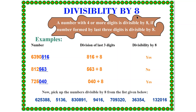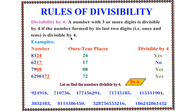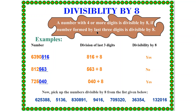The next rule is divisibility by 8. The rule is: a number with 4 or more digits is divisible by 8 if the number formed by its last 3 digits is divisible by 8. In the case of 4, we were concerned with the last 2 digits — the 1s and 10s places. But in the case of 8, we are concerned with the last 3 digits, up to the hundreds place.